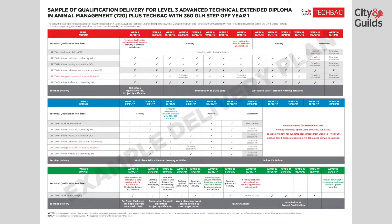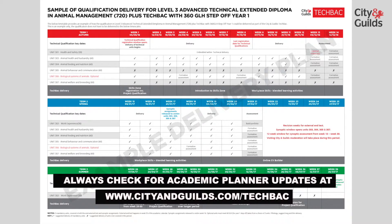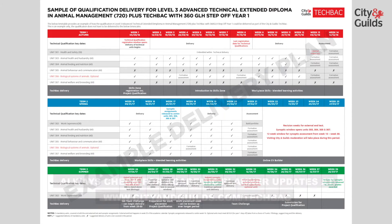Term 1 content consists of five mandatory units and the delivery of one optional unit which is required for this. Health and safety is embedded throughout and is tested at the beginning of December with an Evolve online test. You'll note that for the optional unit selected — in this case Biology — formative assessment has been put in every month, in order to prepare learners for the test in the second term.